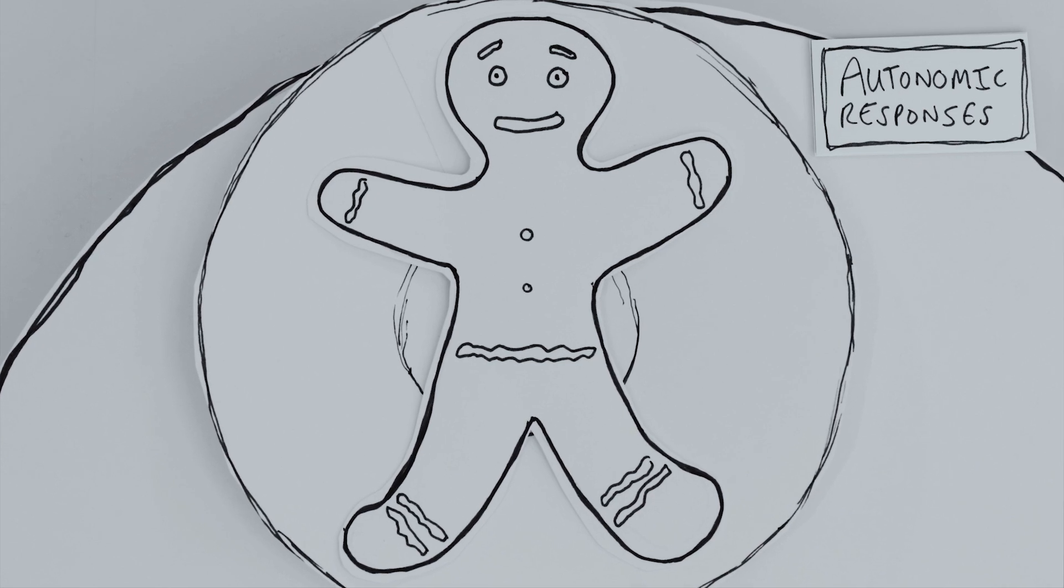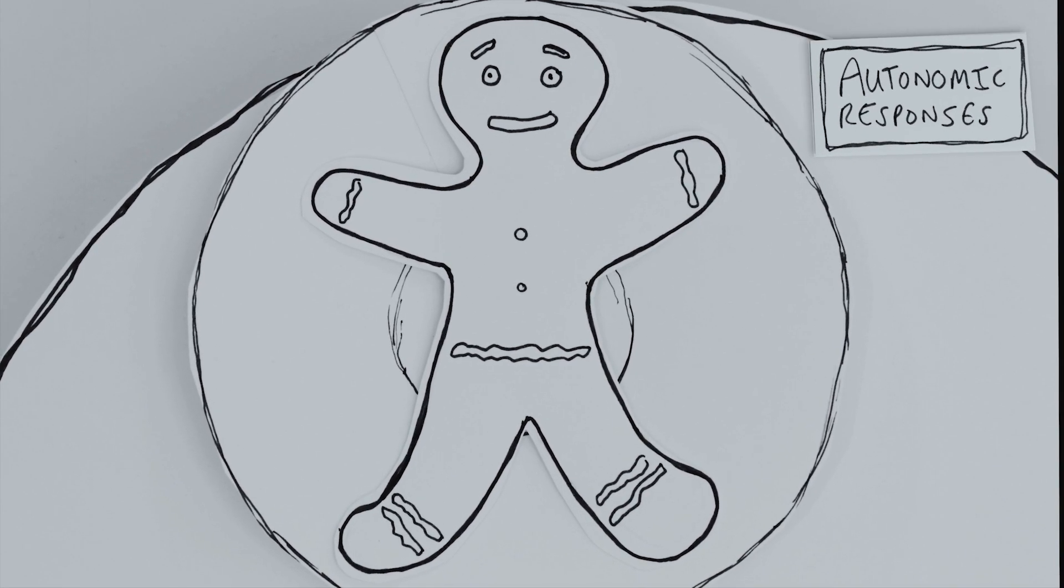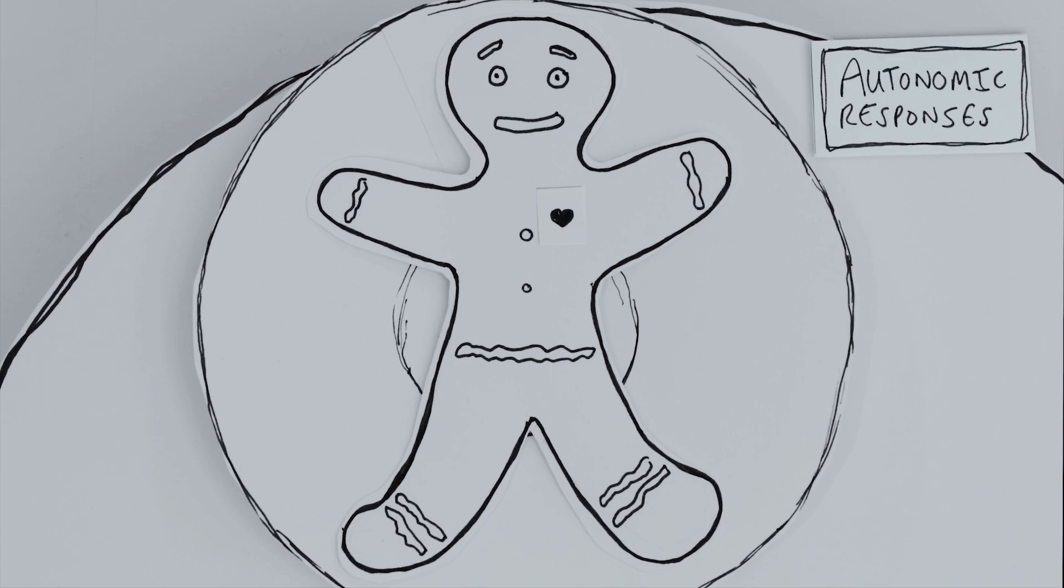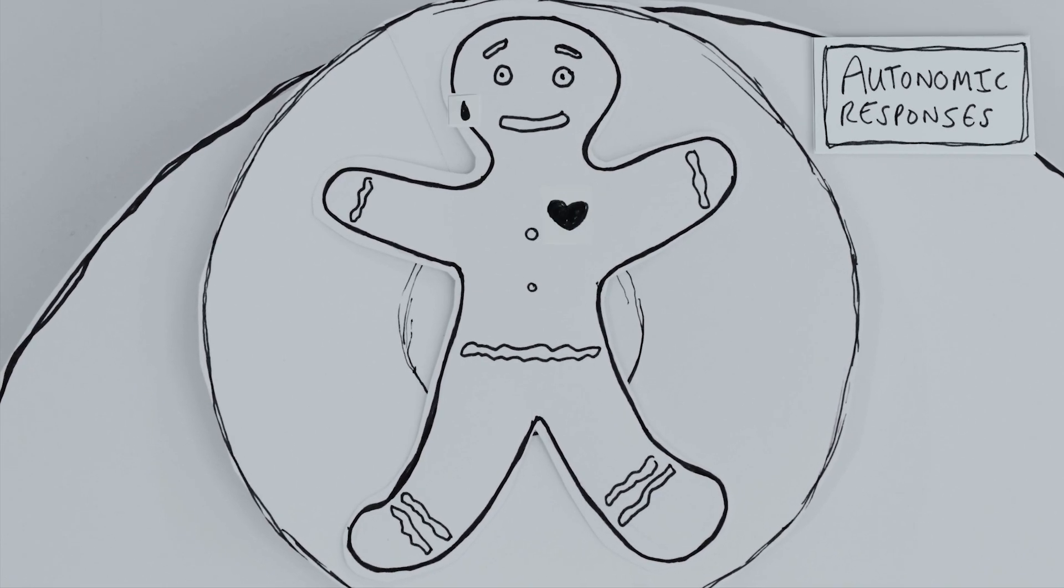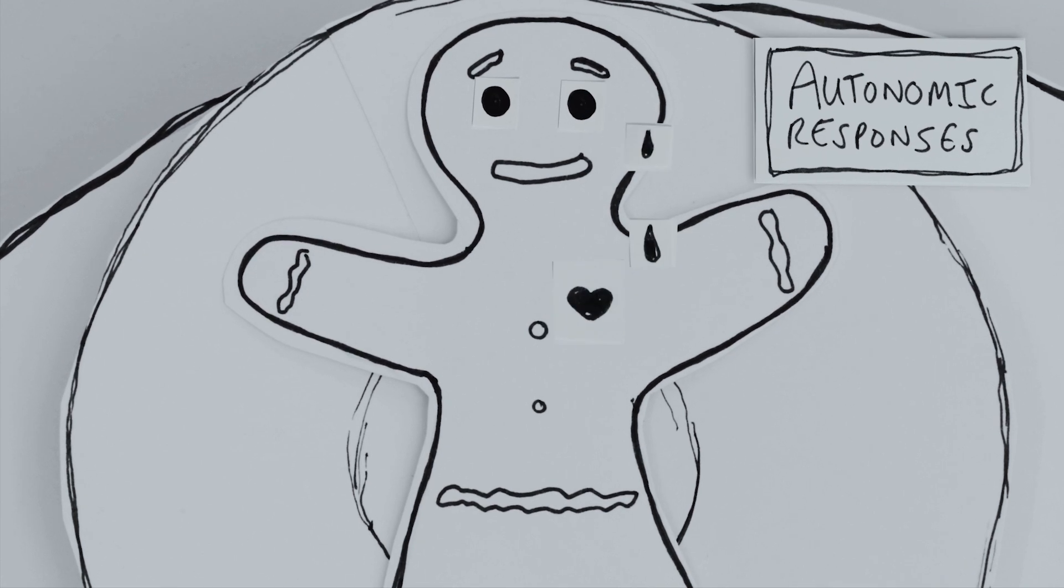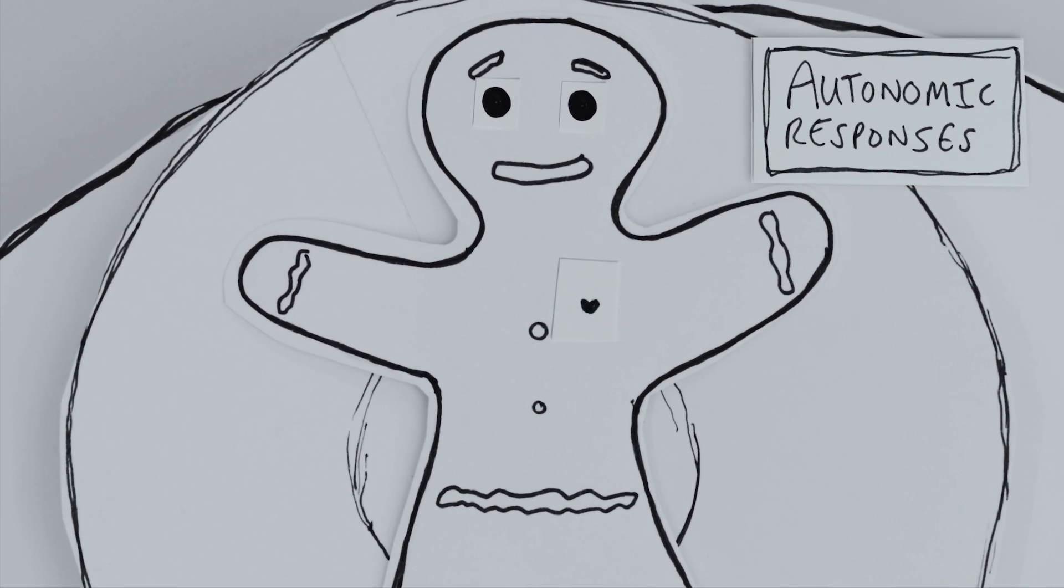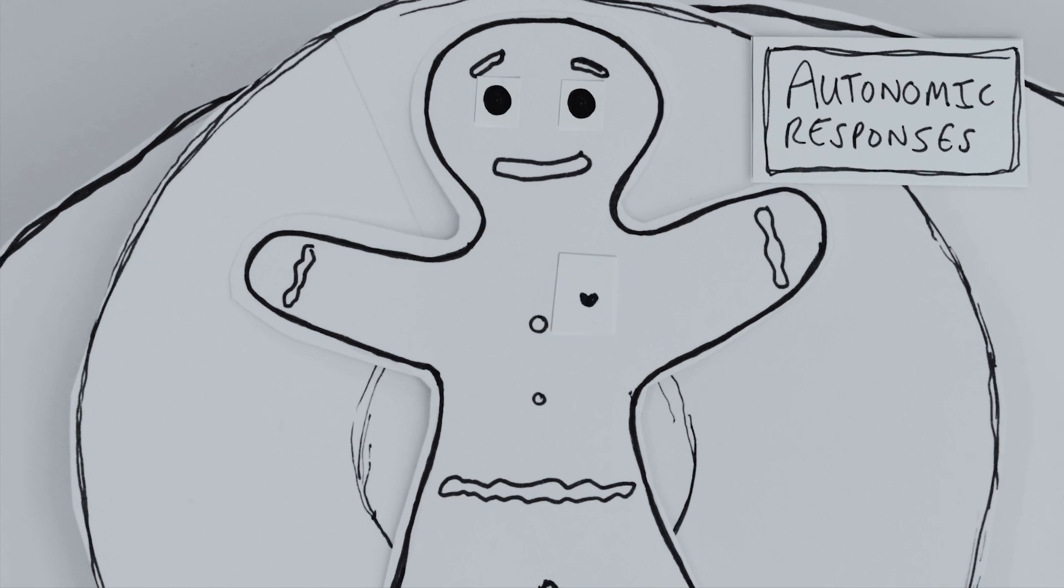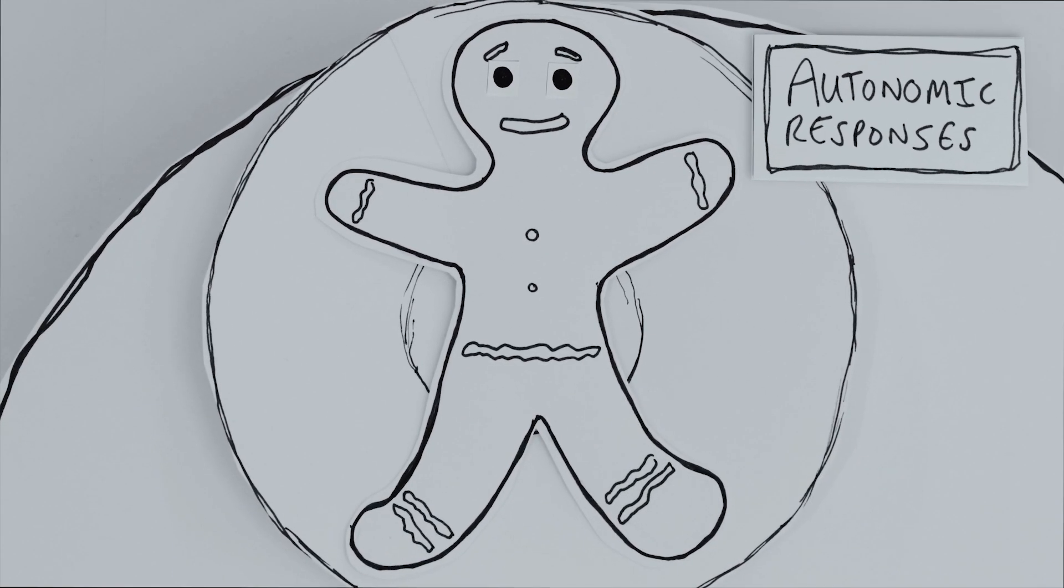We can start by measuring the emotional response in their body. Does their heart begin to pound? Do they begin to sweat? Do their pupils dilate? These responses are happening all over the body. We call these autonomic responses.